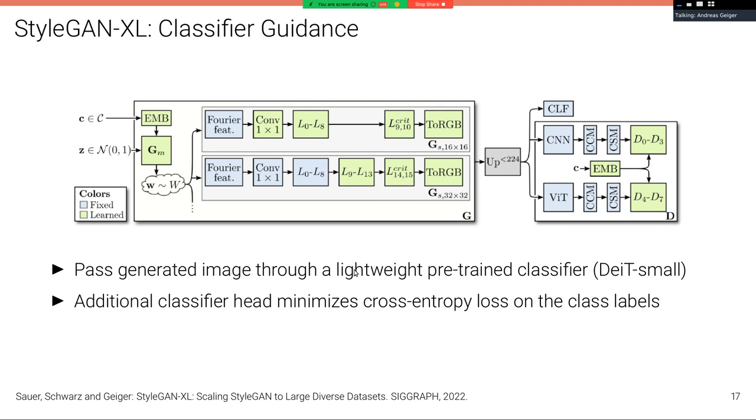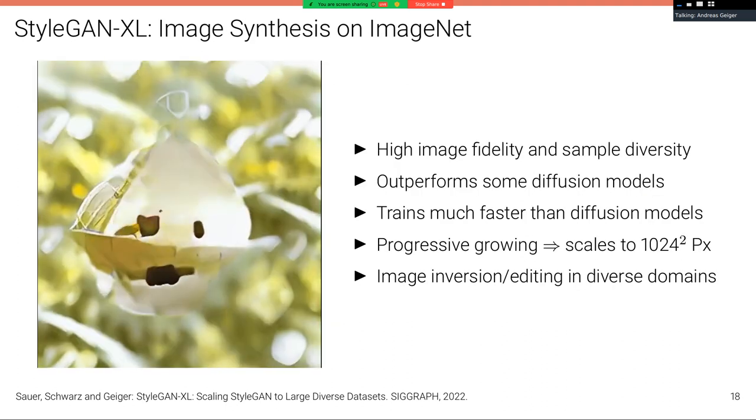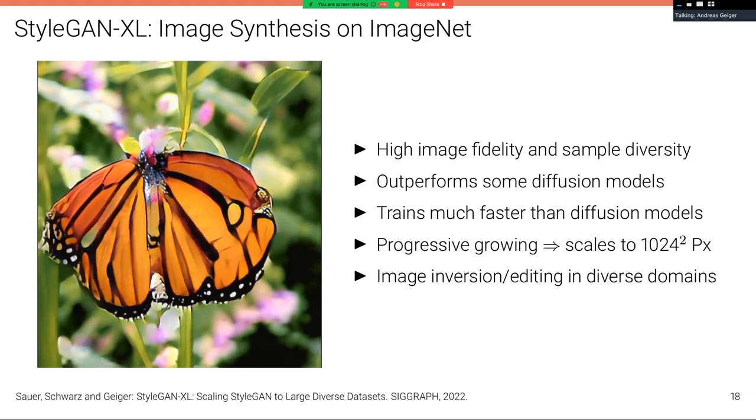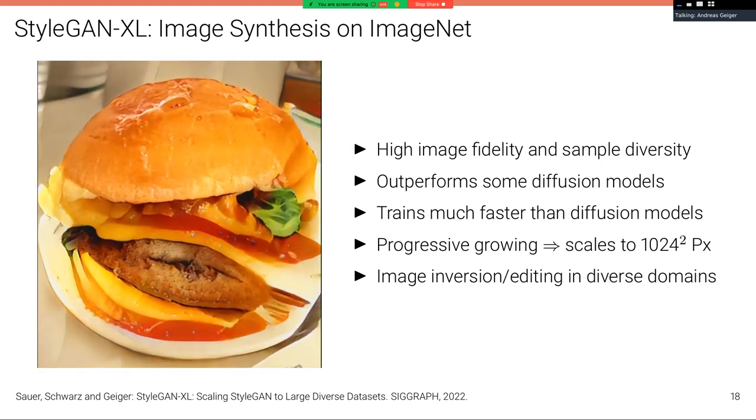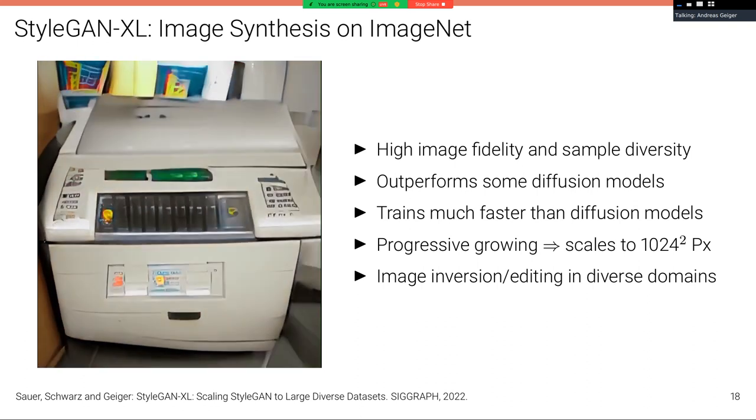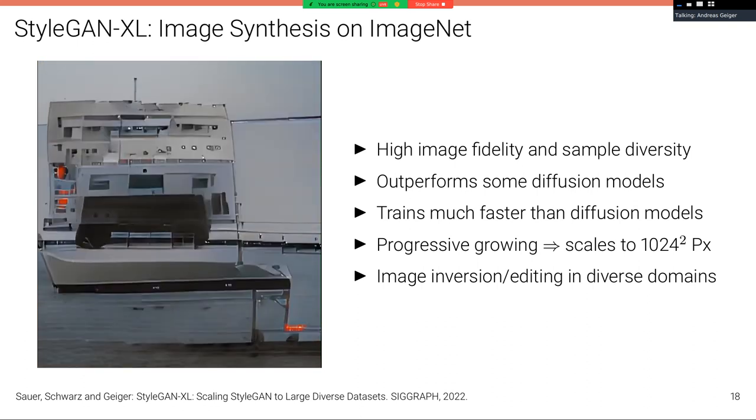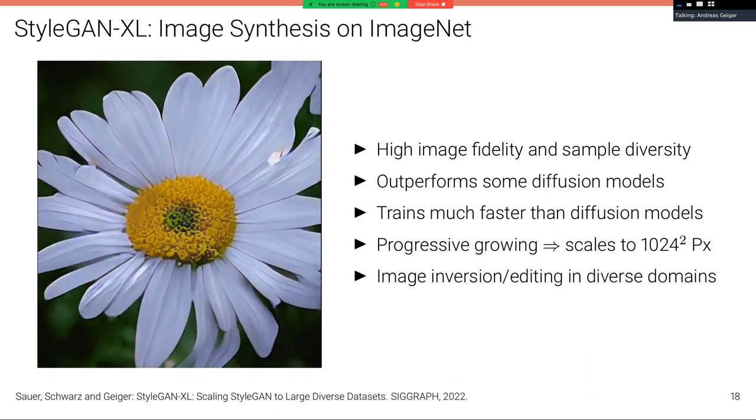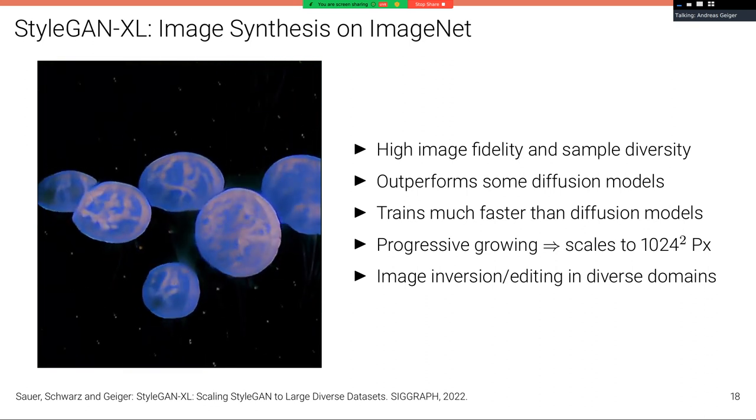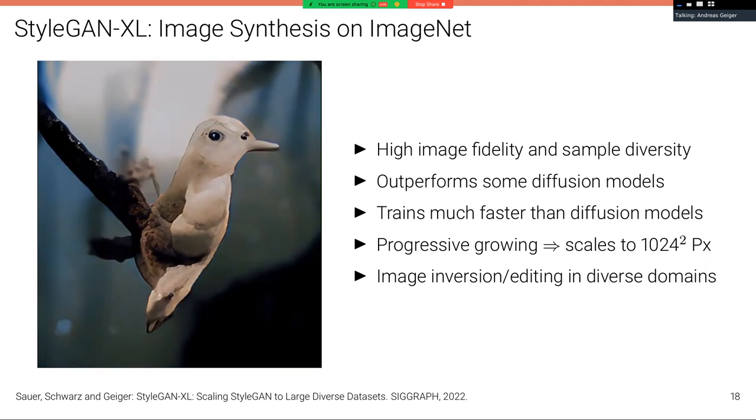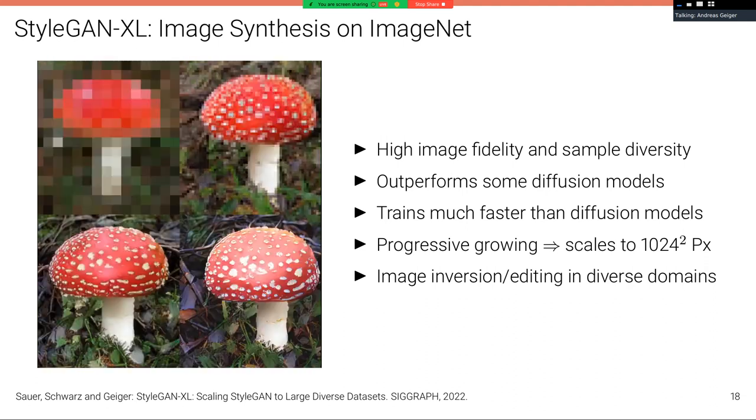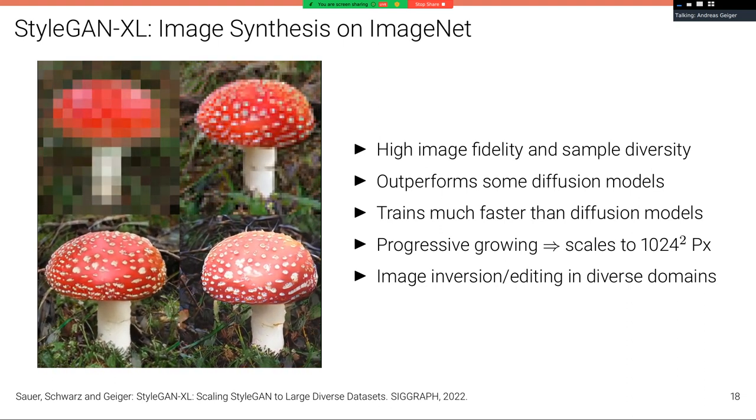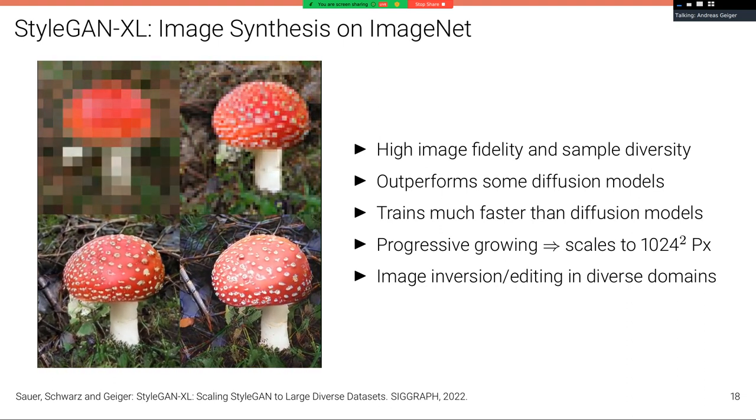And now these five modifications together give us good results and the stability required for optimizing this two-player game to lead to good results on datasets as diverse as ImageNet. And here are some results. What you can see here is that we obtain high image fidelity and sample diversity, which outperforms even some of the most advanced diffusion models. But in contrast, it trains much faster than diffusion models and also inferences much faster than diffusion models. And with this progressive growing strategy, we can scale this up to more than one megapixel resolution. It also allows for image inversion or editing in diverse domains because we now have a model that operates on the whole space of ImageNet images.